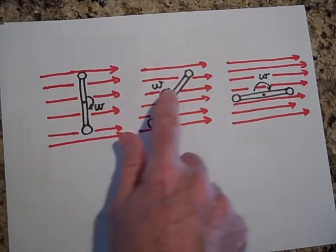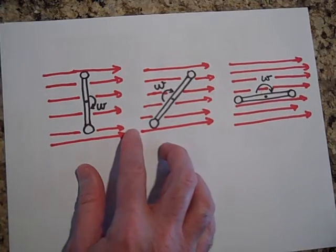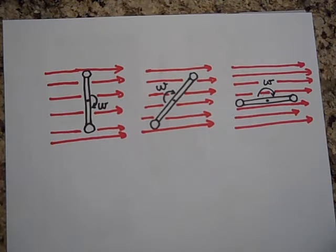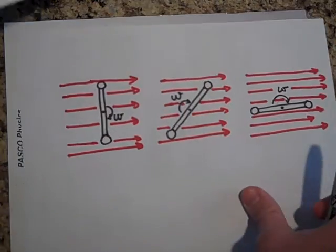But you're turning it at a constant angular speed. And so omega, that W is an omega, and that's to show that that's the speed at which you're turning it.